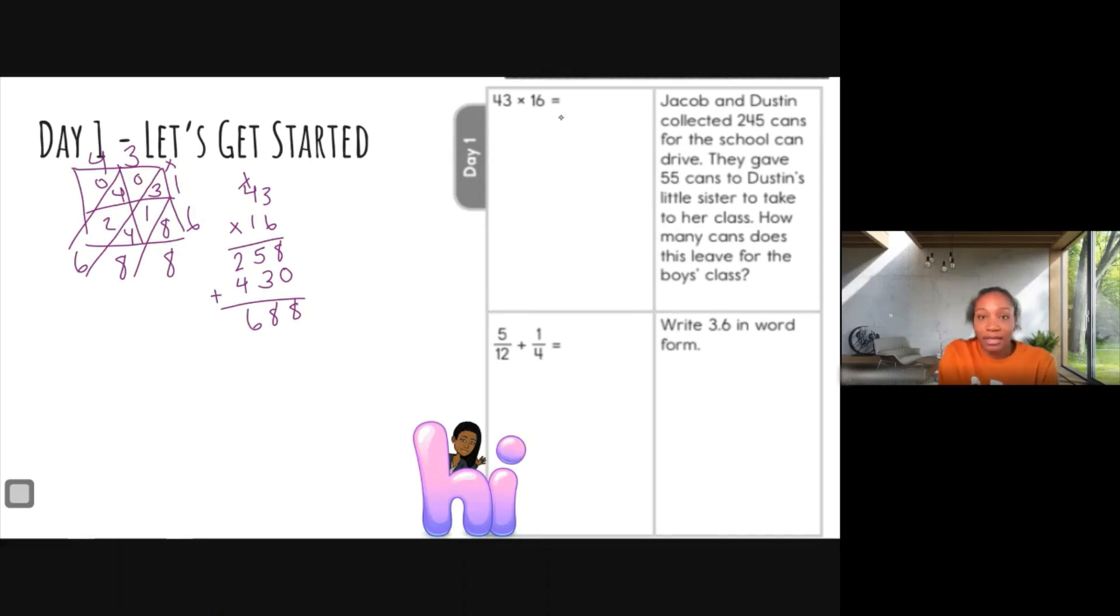All right, let's move on to the second question. Jacob and Dustin collected 245 cans for the school can drive. They gave 55 cans to Dustin's little sister to take to her class. How many cans does this leave for the boys' class?